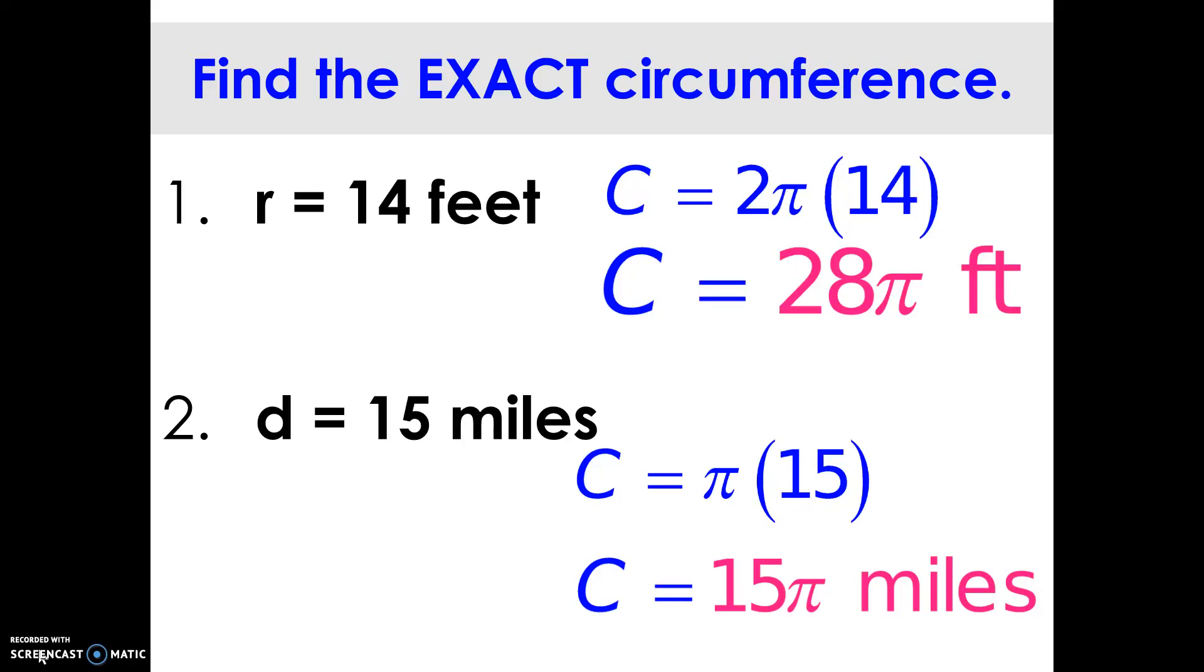If you have a radius of 14 feet, the exact answer would be 28 pi feet. For a diameter of 15 miles, the circumference would equal 15 pi miles.